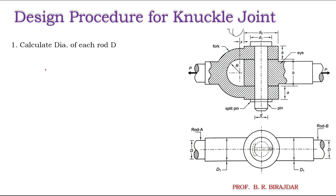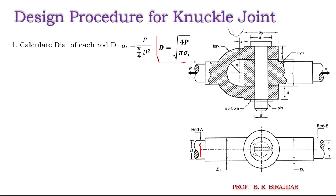The first step is to calculate the diameter of the rod. We know that sigma t is equal to load upon area. Rearranging this, we can directly find out the diameter of the rod. Then, once we calculate this capital D, we move to the next step.